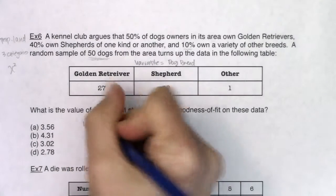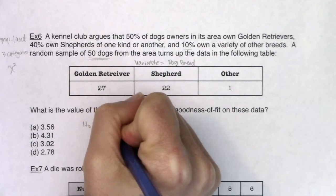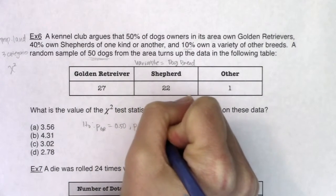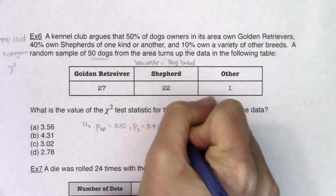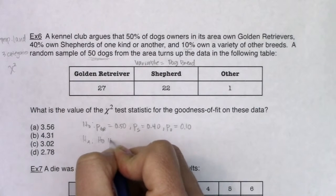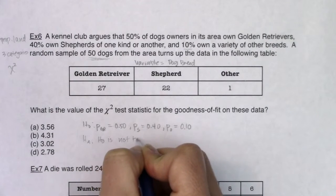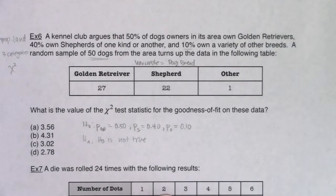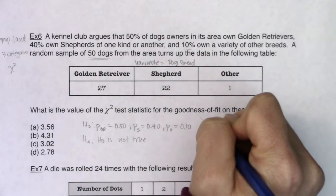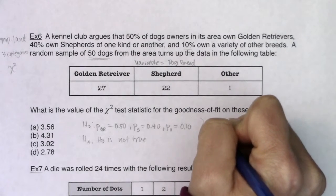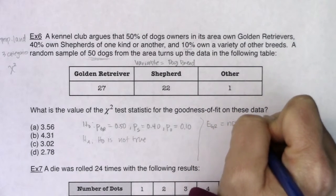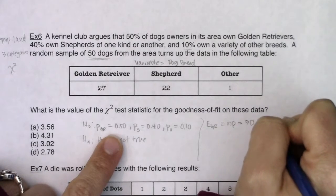My null hypothesis would be: the proportion of golden retrievers is 50%, the proportion of shepherds is 40%, and the proportion of others is 10%. The alternate is that H-naught is not true — something is off in those hypothesized proportions. To find the chi-squared test statistic, I need all the expected counts. Expected golden retrievers = NP = 50 times 50% = 25.